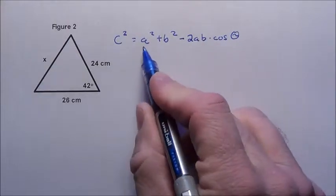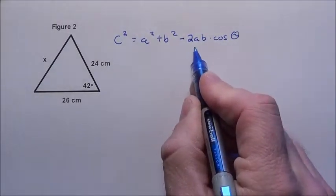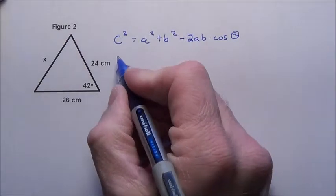So we've got to subtract this amount. It's sort of like the Pythagorean theorem, but you've got to take away a little bit more. That's how I remember this.